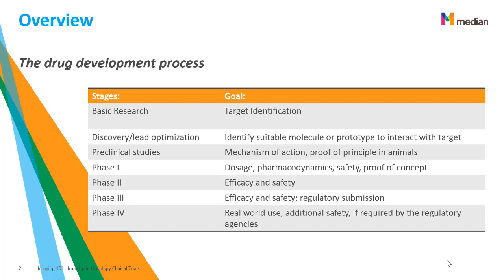To get started, here is an overview of the drug development process from different stages and the purpose of each stage. Basic research has a goal of target identification. Discovery lead optimization has a goal to identify the molecule or prototype to interact with the target. In preclinical studies, the goal is to obtain a proof of principle and or to understand the mechanisms of action. All of these trials are conducted with animals as the test subjects.